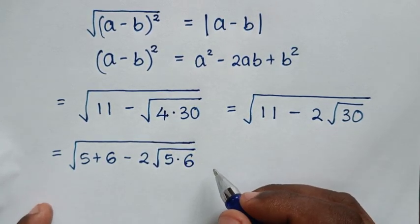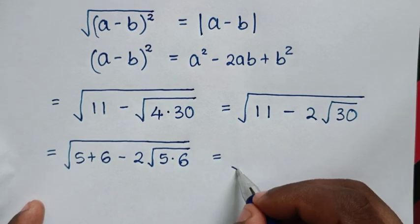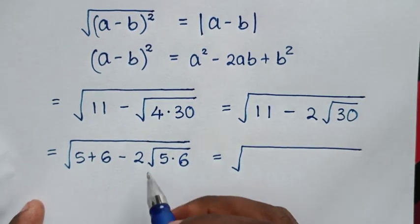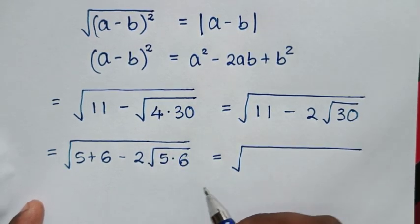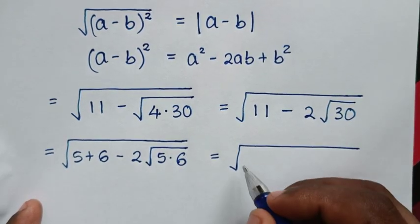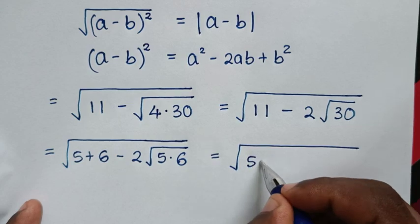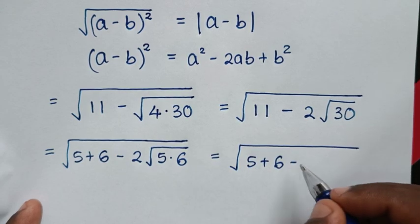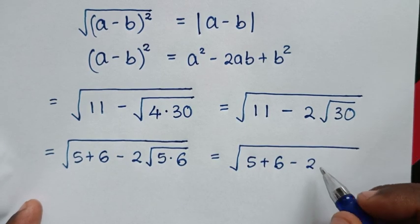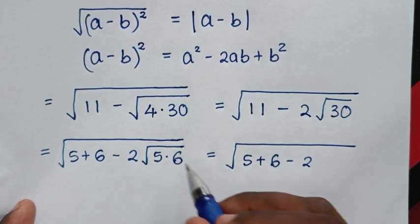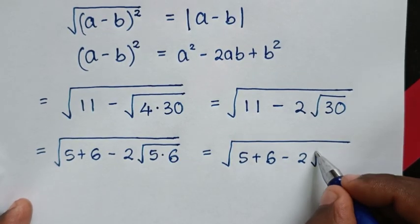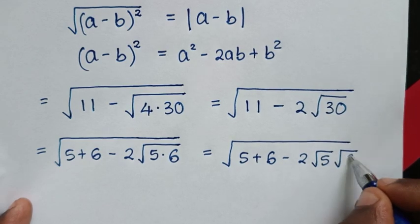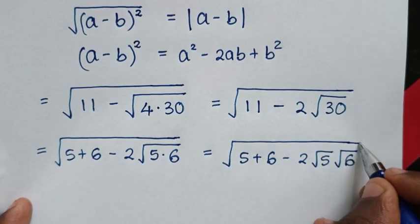Separating the terms, this becomes the square root of 5 plus 6, minus 2 times √5 times √6.